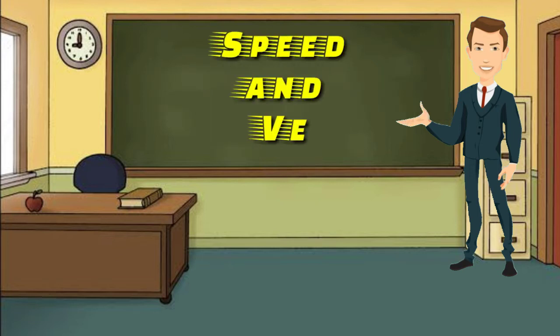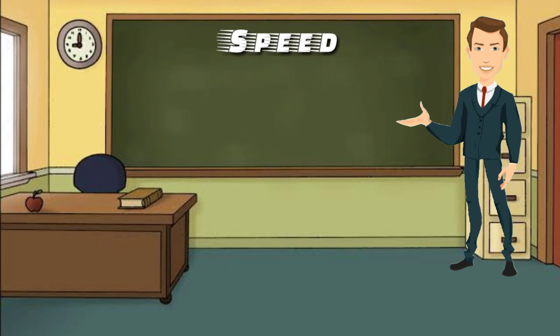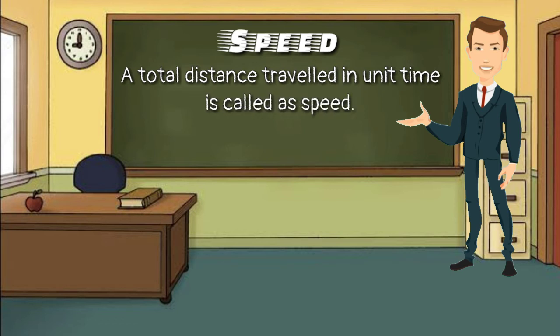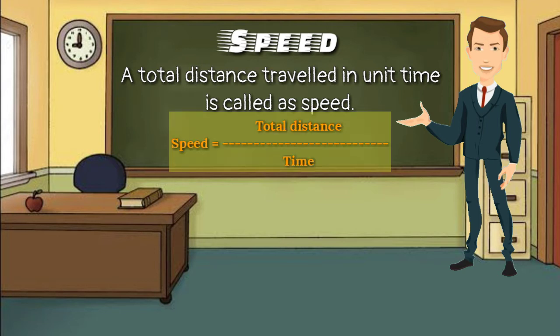The next point is speed and velocity. Speed is the total distance traveled in a unit time. The formula is: speed equals distance divided by time. For speed, only magnitude is important and direction is not important. Therefore, speed is a scalar quantity.